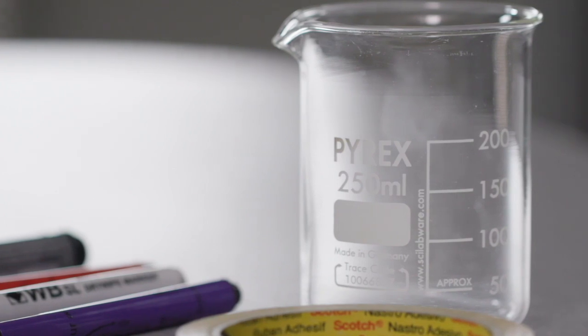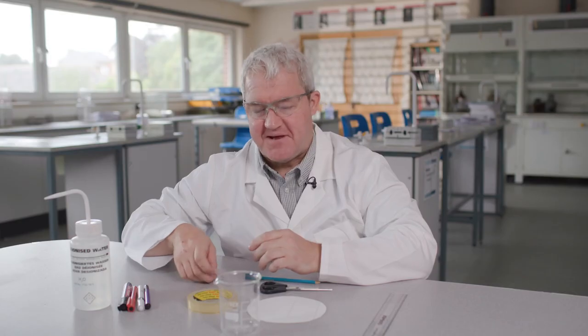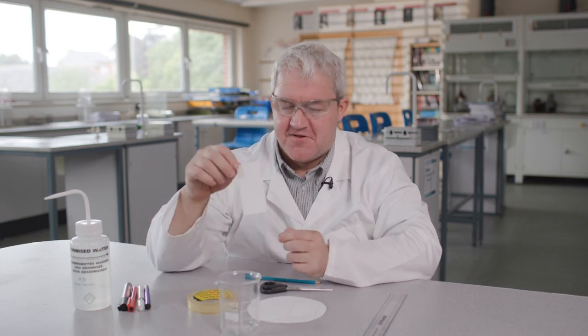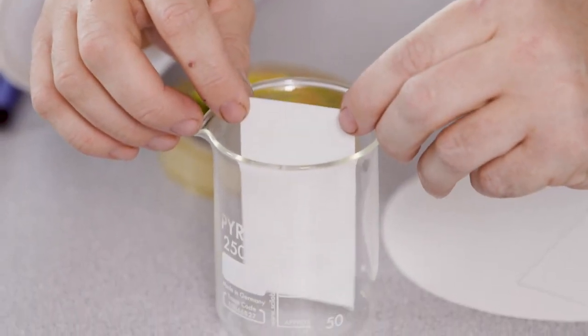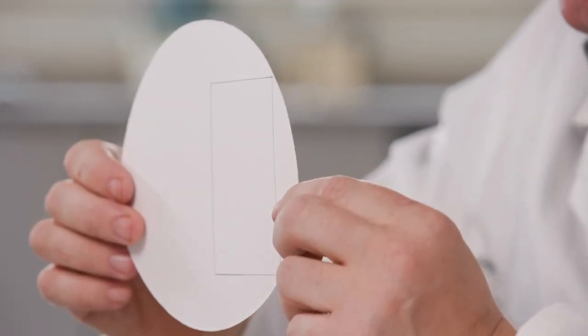The first thing we need to look at is the beaker. Now the beaker is going to dictate the dimensions of the chromatography paper. It's very important that the chromatography paper goes into the beaker and it doesn't touch the sides. So what I've used here is a piece of filter paper and I've drawn my chromatography paper outline on there and cut it out.